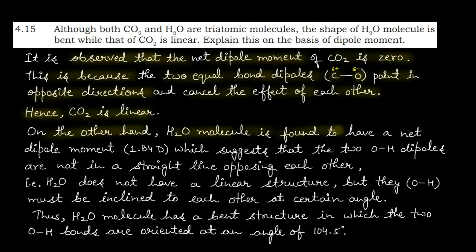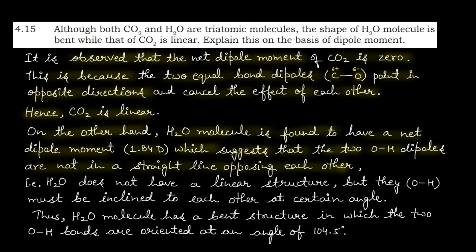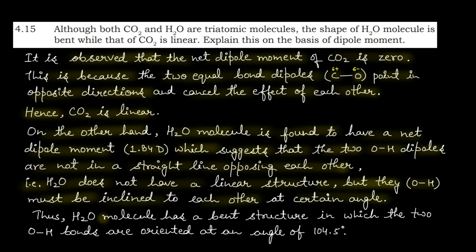On the other hand, H2O molecule is found to have a net dipole moment value of 1.84 Debye (for reference only). This suggests that the two OH dipoles are not in a straight line opposing each other — since dipole moment की कुछ ना कुछ value आ रही है, the two OH dipoles must be inclined to each other at a certain angle. Thus, H2O molecule has a bent structure in which the two OH bonds are oriented at an angle of 104.5 degrees.